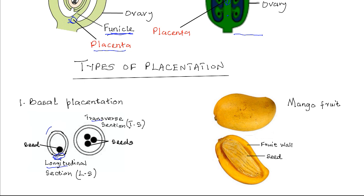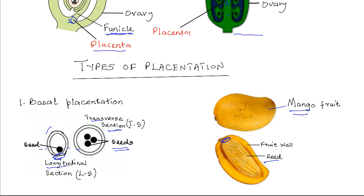This is a transverse section — here we have several seeds. If you cut the fruit transversely, you get this view. An example of a fruit with basal placentation is a mango. Here is a seed and it is attached to the placenta. In basal placentation, the fruit may have one or more seeds attached to the base of the ovary wall or the base of the fruit wall.